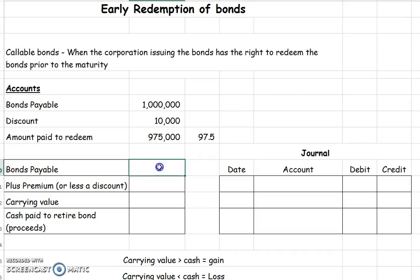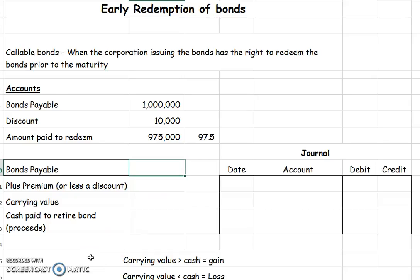To calculate what our gain or loss would be on the early redemption of our bonds, we're going to put it into this table. You'll want to memorize this little table. It goes like this: bonds payable is one million dollars, and it's either plus a premium or less a discount. Since we've got a discount, I'm going to put it in as a minus.